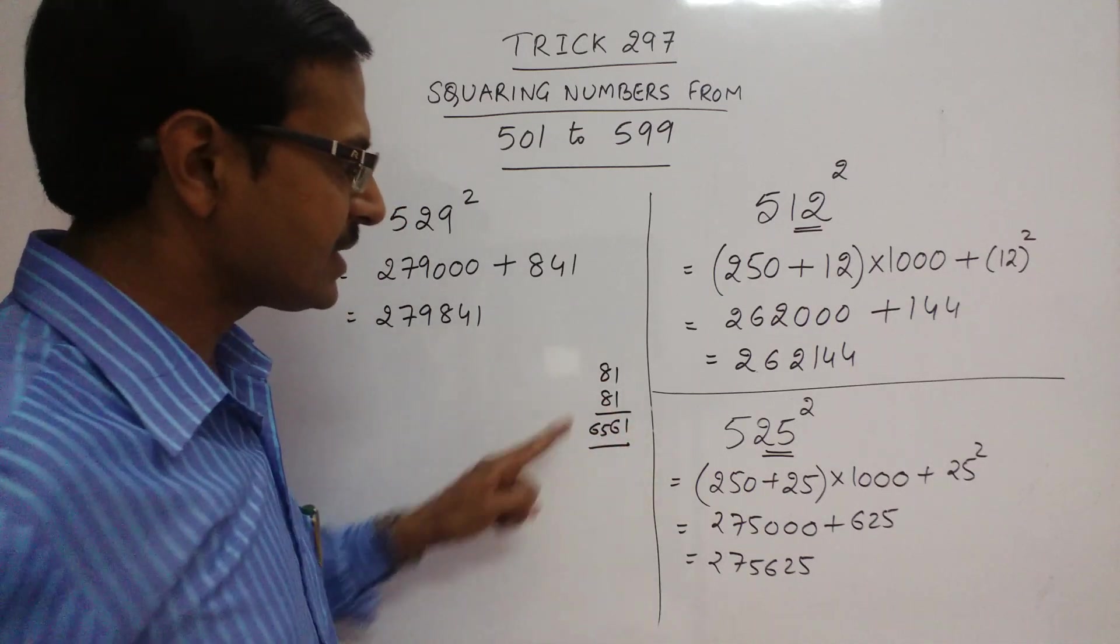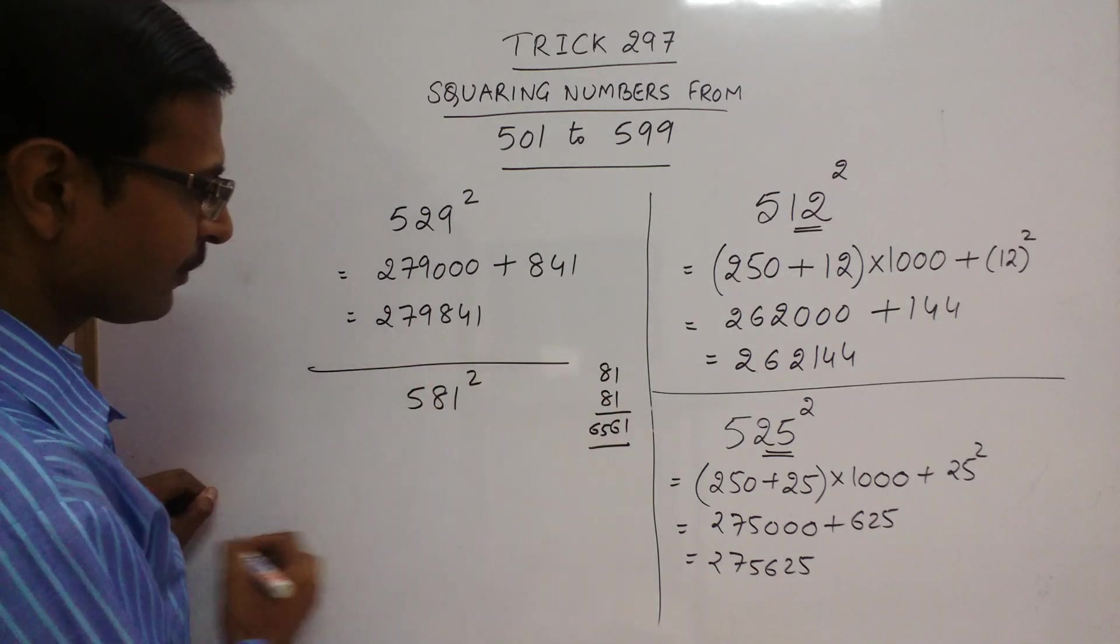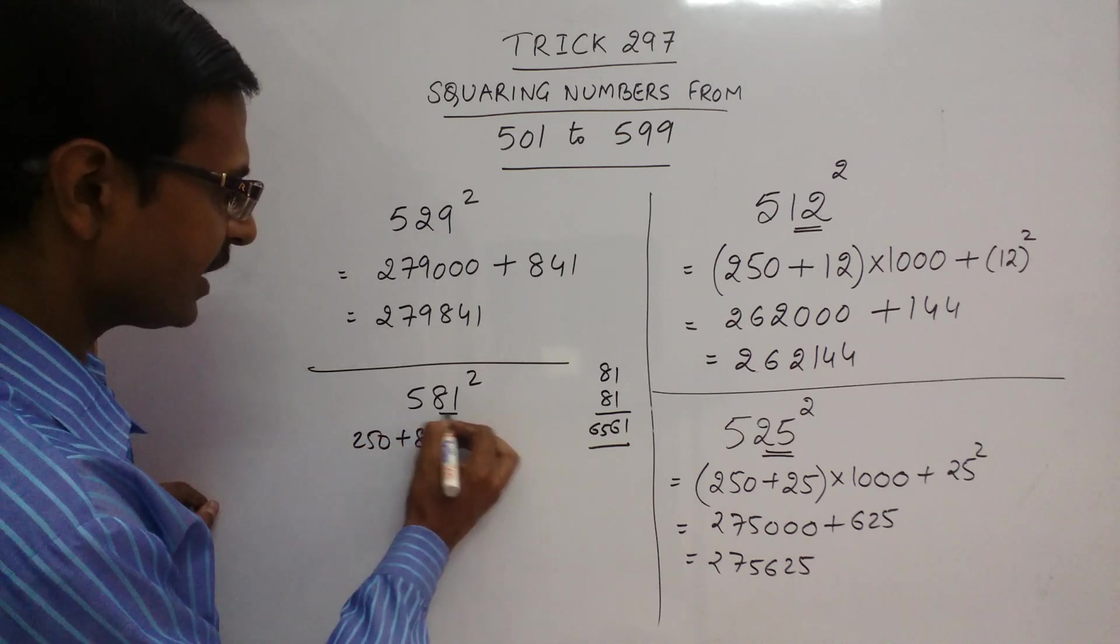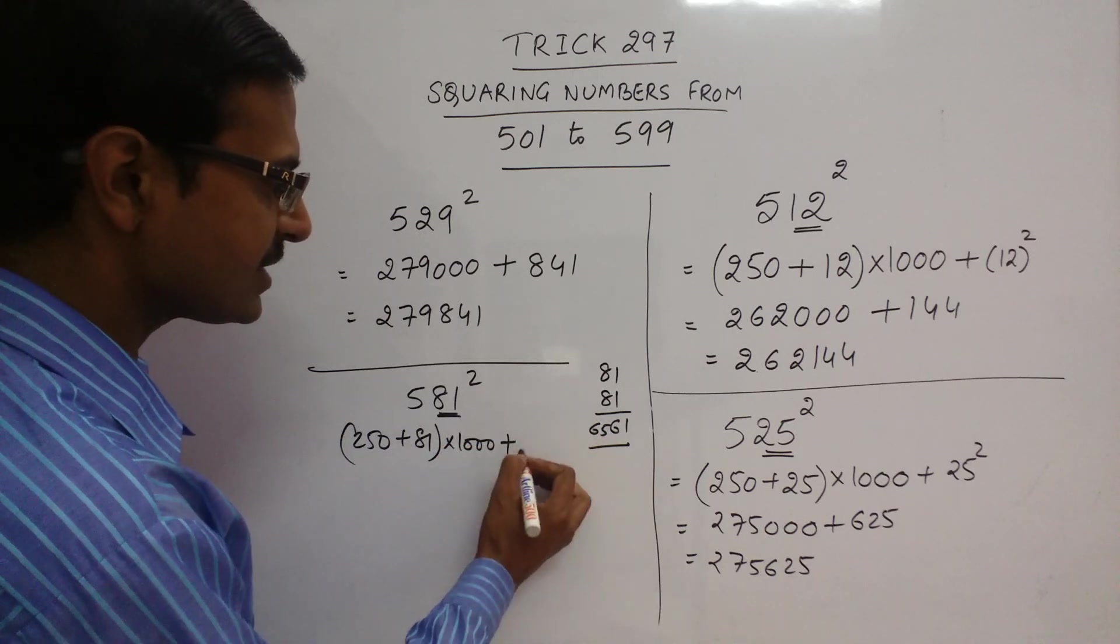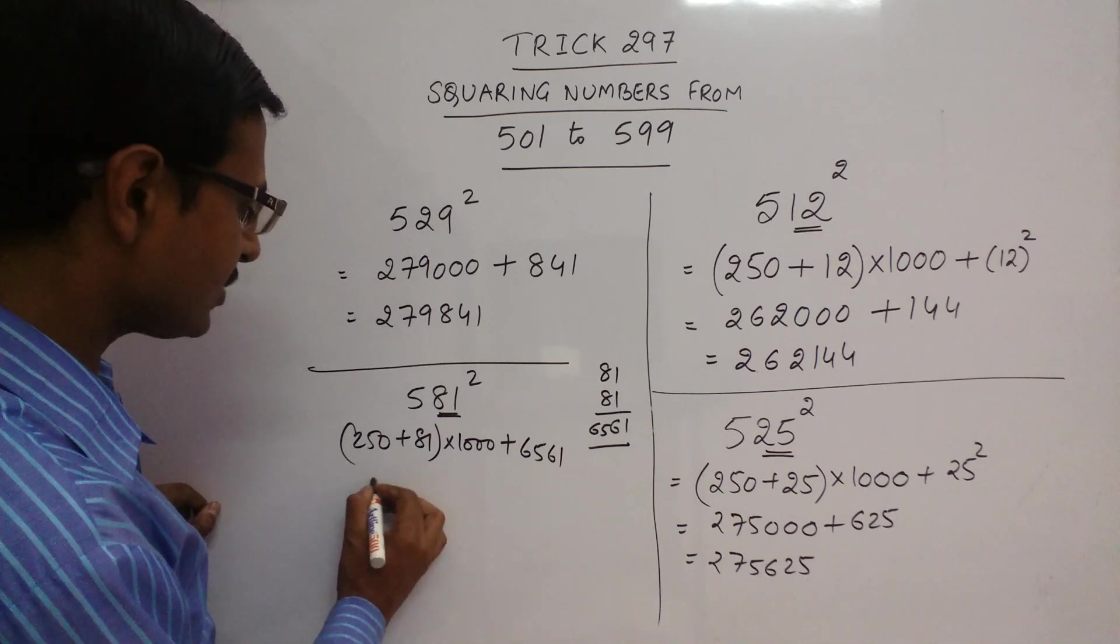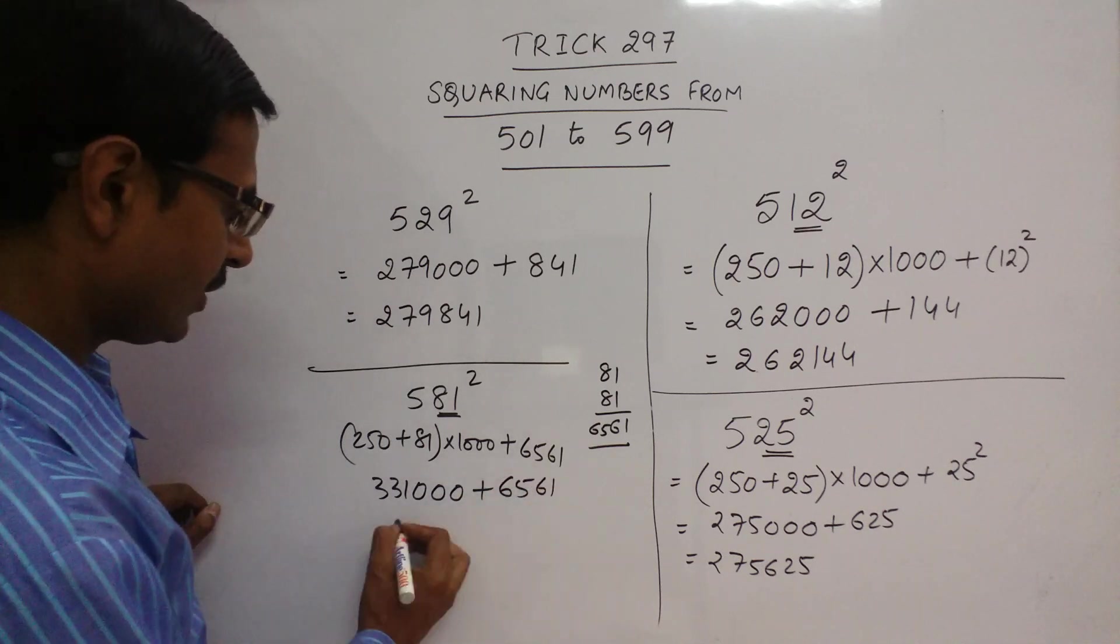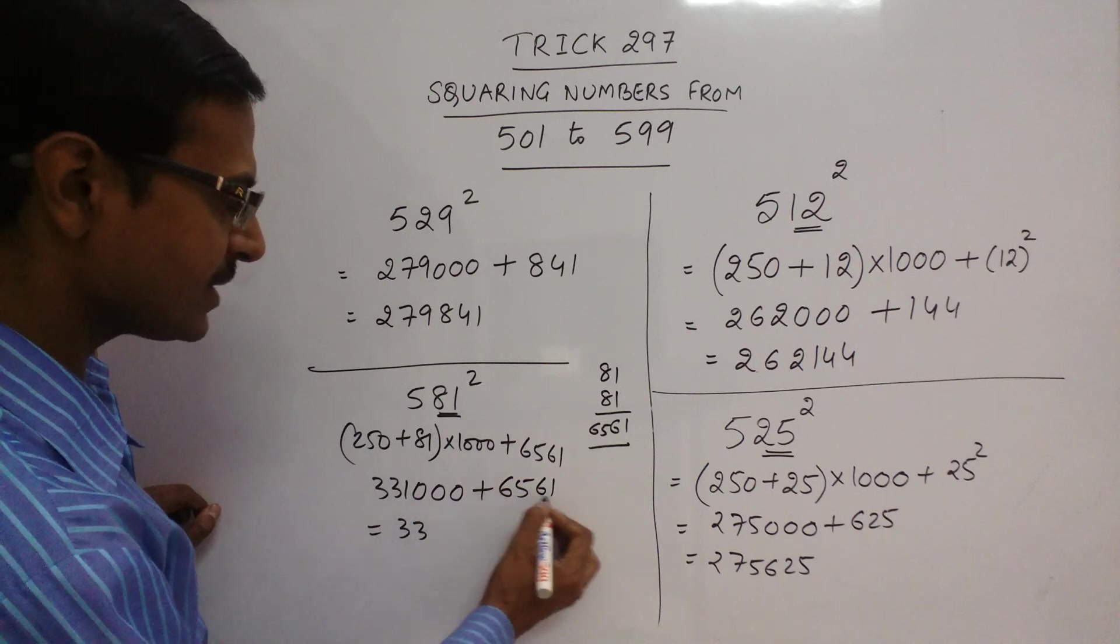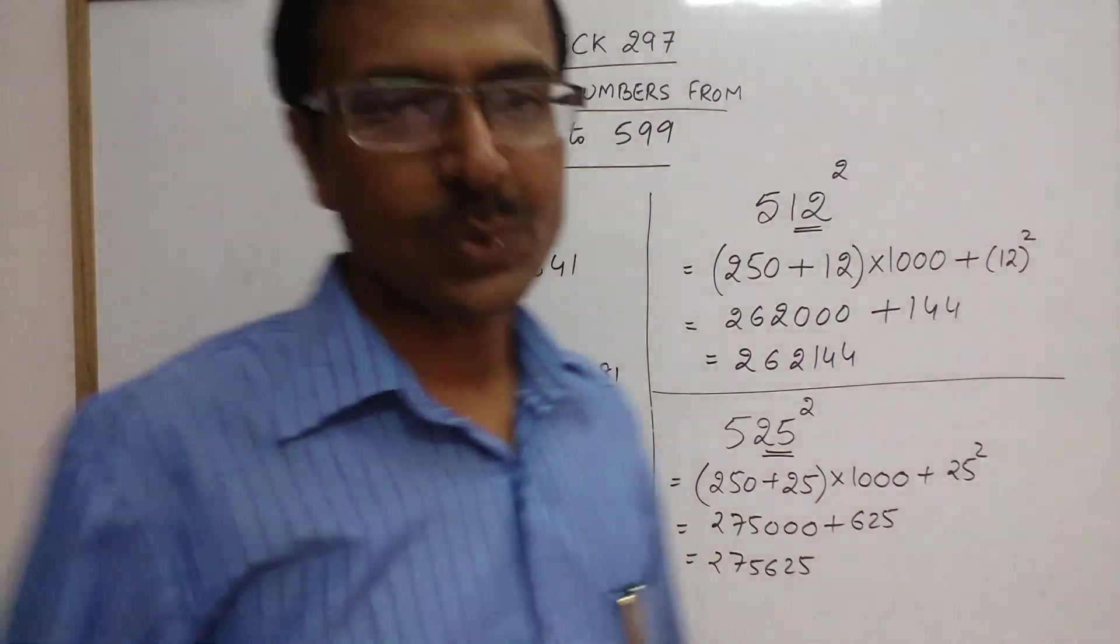What do we do for finding 581 square? It is 250 plus 81. This is the number here, 81. Multiply it by 1000 and add the square of 81, which is 6561. If you add this, 250 plus 80 is 330. So 331,000 and add 6561. Your answer for the square of 581 is 337,561. This is the final answer.